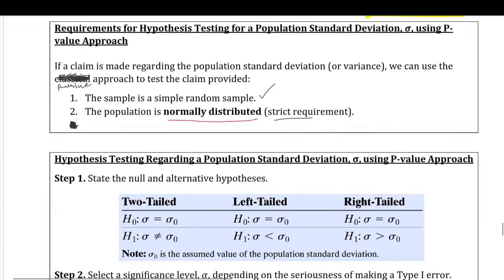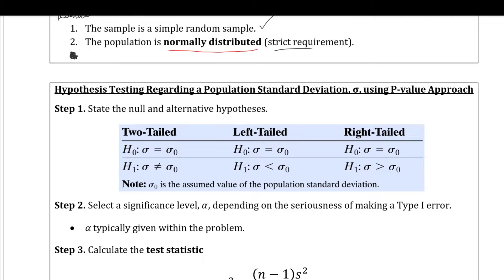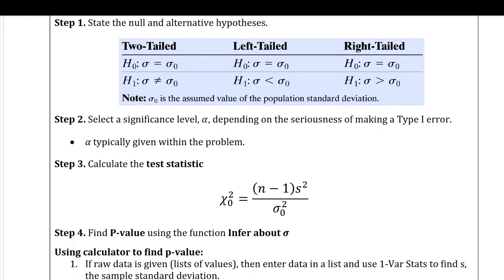Let's go right into the steps. Step one is our hypothesis test — you have one of three options. Step two, identify your significance level. Step three is the chi-squared test statistic: that's sample size minus one, times the sample standard deviation squared, over the population standard deviation squared. This is more of a ratio between what we see from our data and what we see in the null hypothesis. Step four, draw a picture and use the calculator to find the p-value.